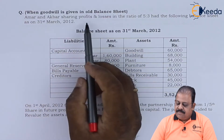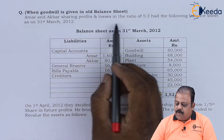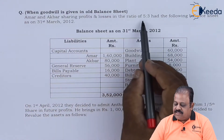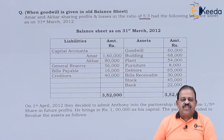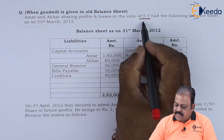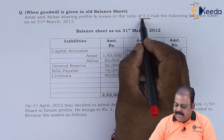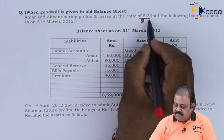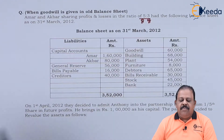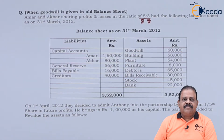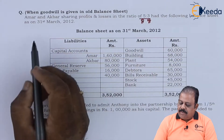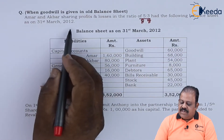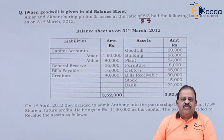Amar and Akbar sharing profits and losses in the ratio of 5 is to 3, that is 5/8 and 3/8. They had the following balance sheet as on 31st March 2012.